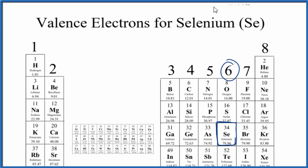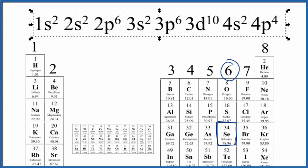We could also look at the electron configuration for Se. So when we do that, here's our electron configuration, and we see that the highest energy level, this right here, the 4s2 and the 4p4, these are the valence electrons.